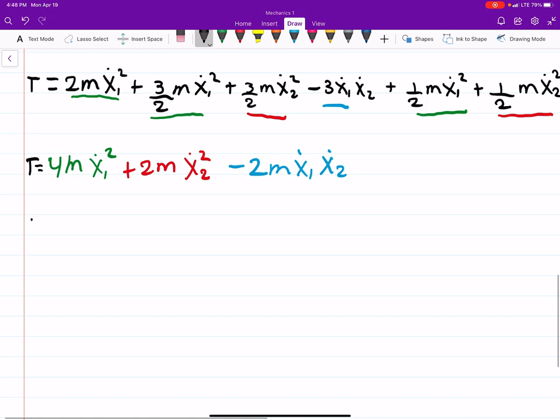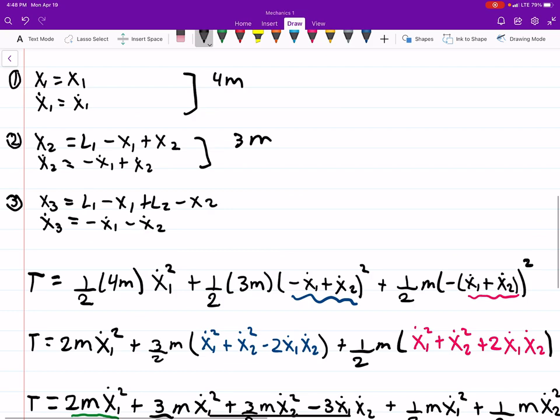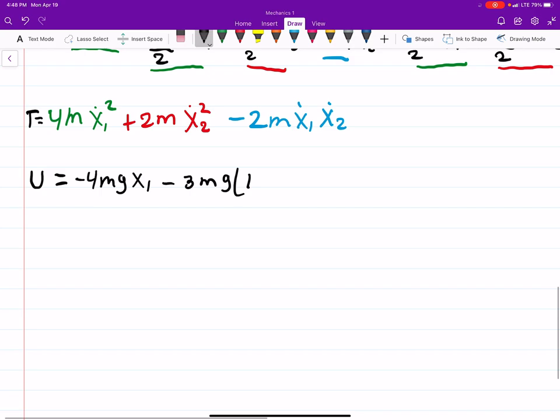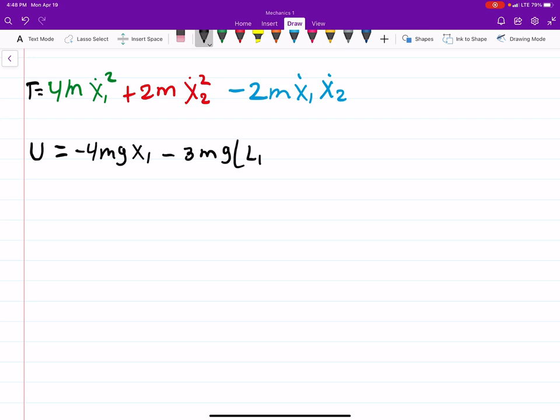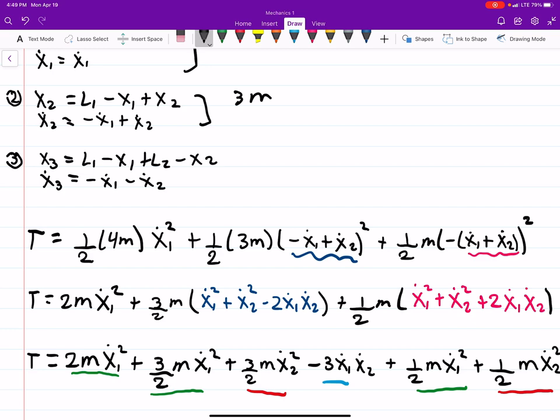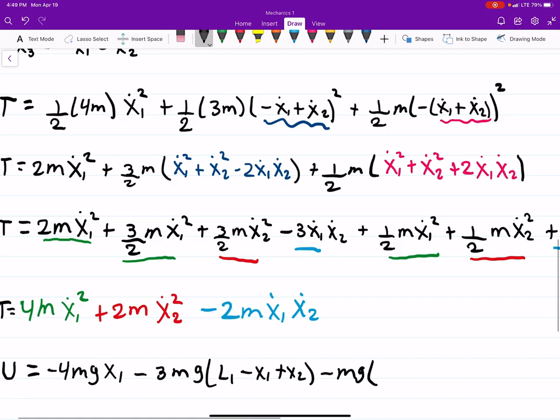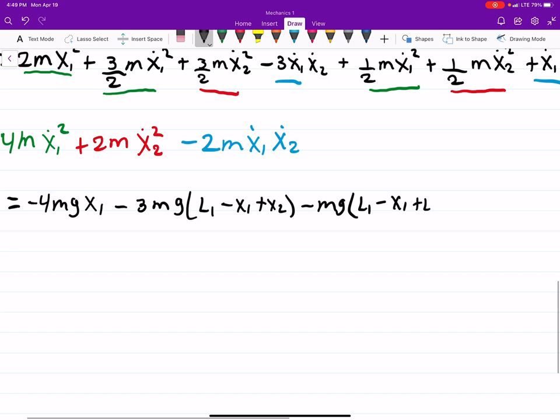And now we need the potential energy of each system. So the potential energy of the first block will be minus mg h. So I'll say minus 4mg x1. So essentially what we're doing is we're just plugging in its position. So for the next one, it will be minus 3mg, and we look at their position and it's L minus x1 plus x2. I should call this L1 because they could be different. L1 minus x1 plus x2 minus mg. And then for the third block, you know, this is our position. These are all our positions, so I can plug that in. So that's L1 minus x1 plus L2 minus x2.